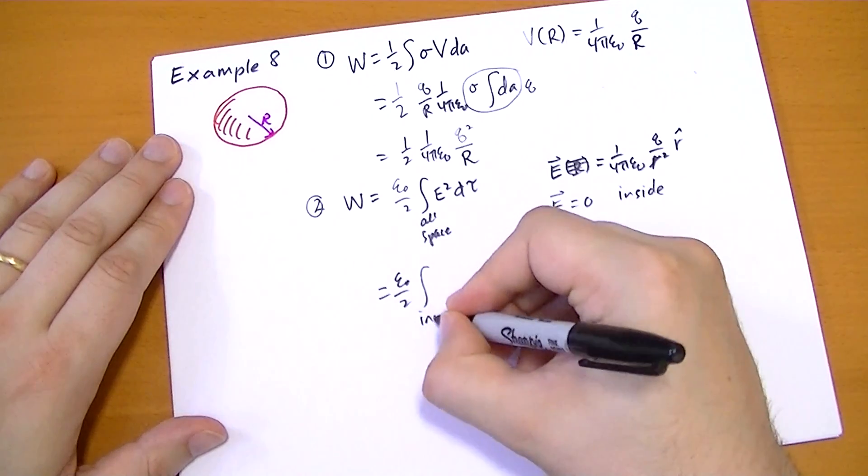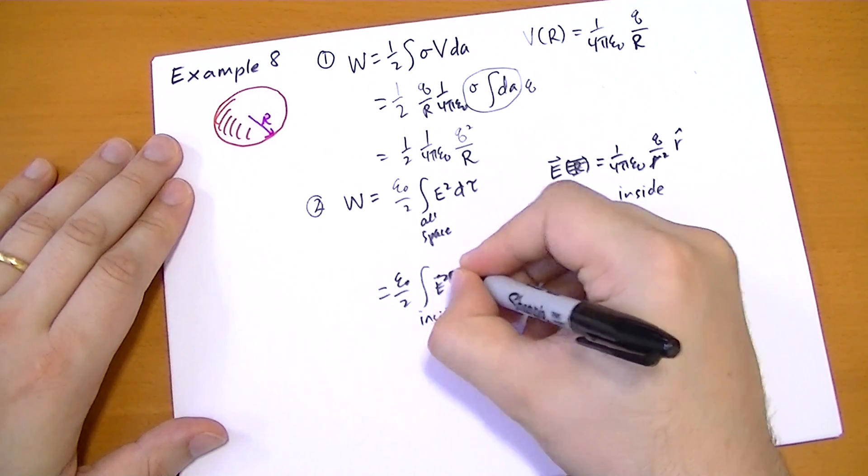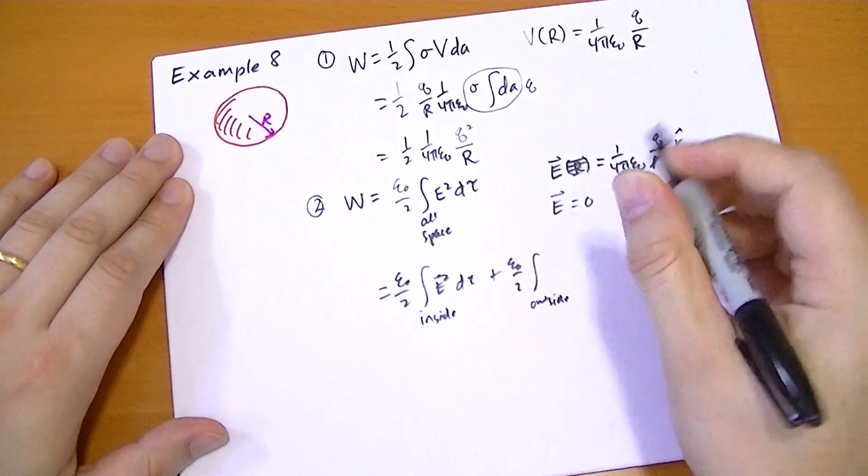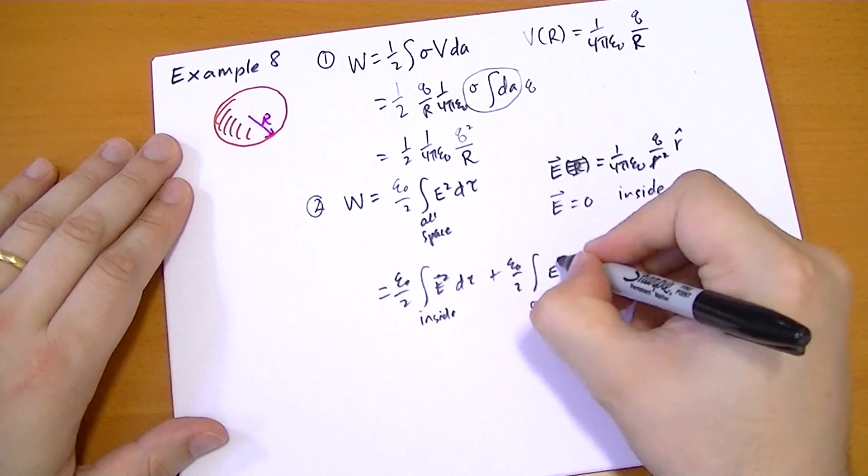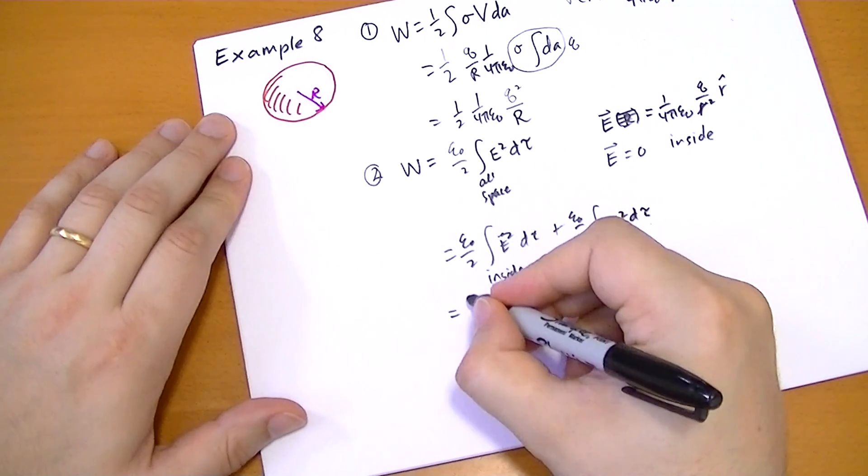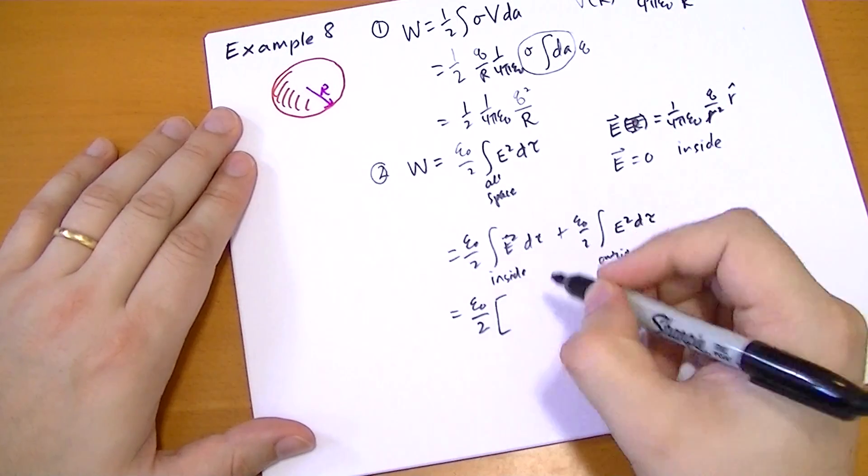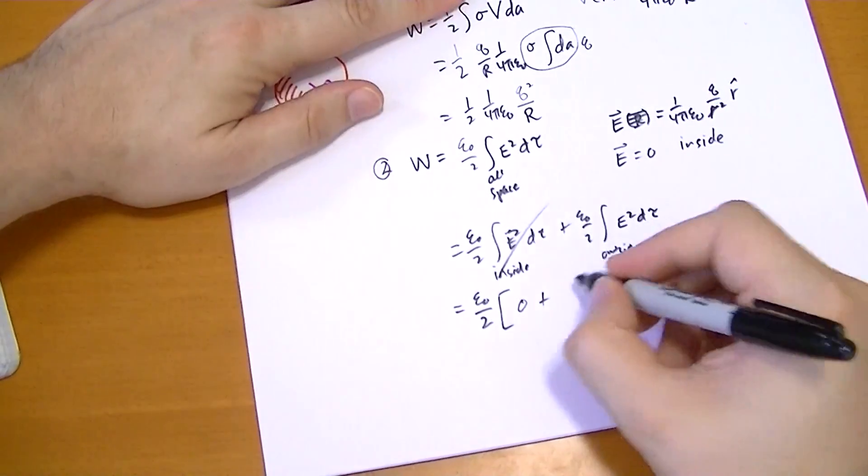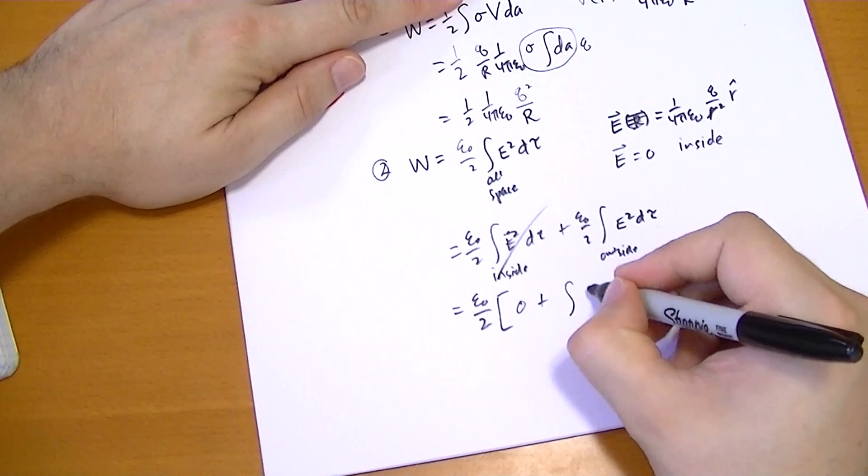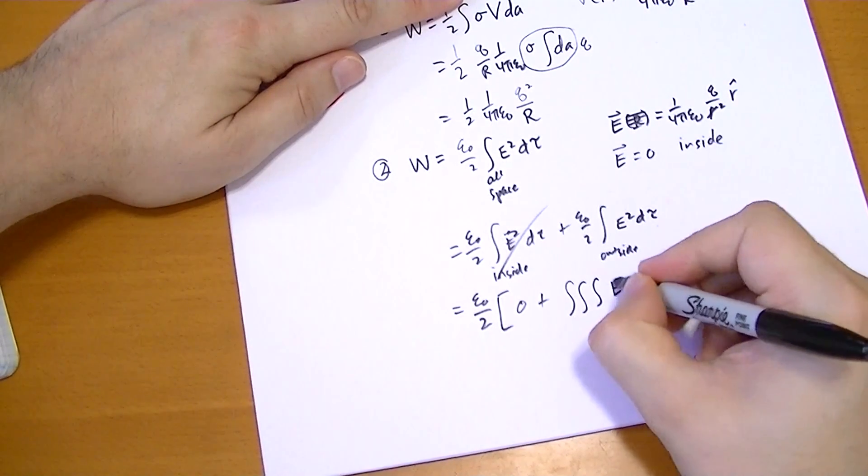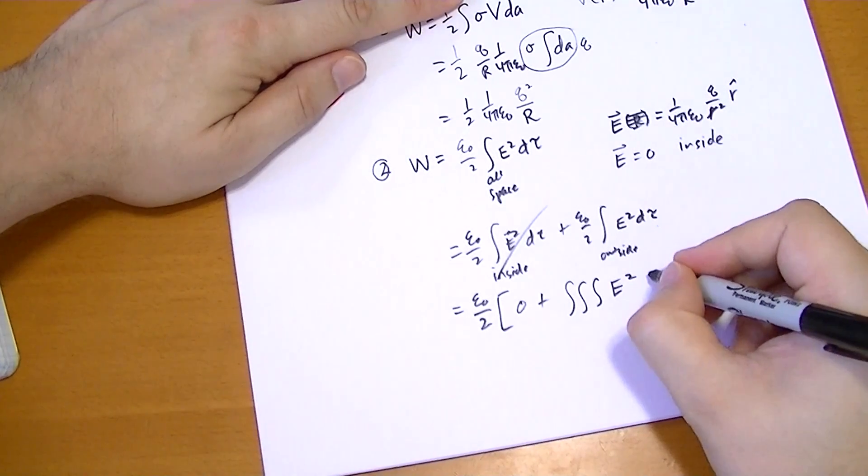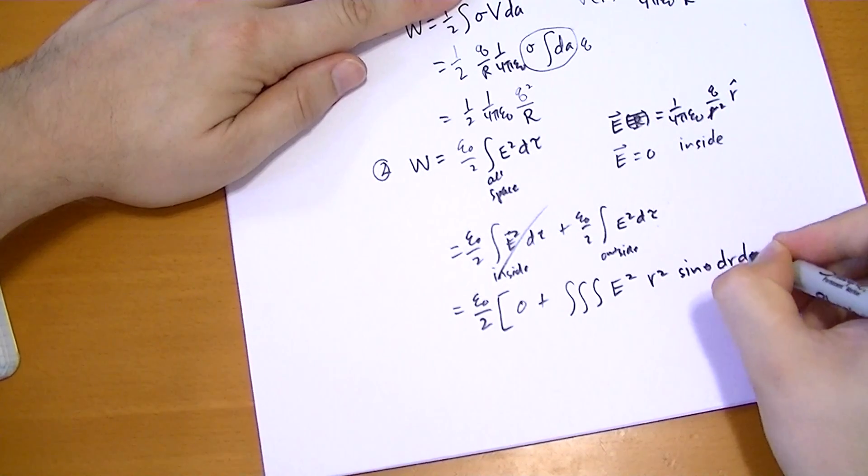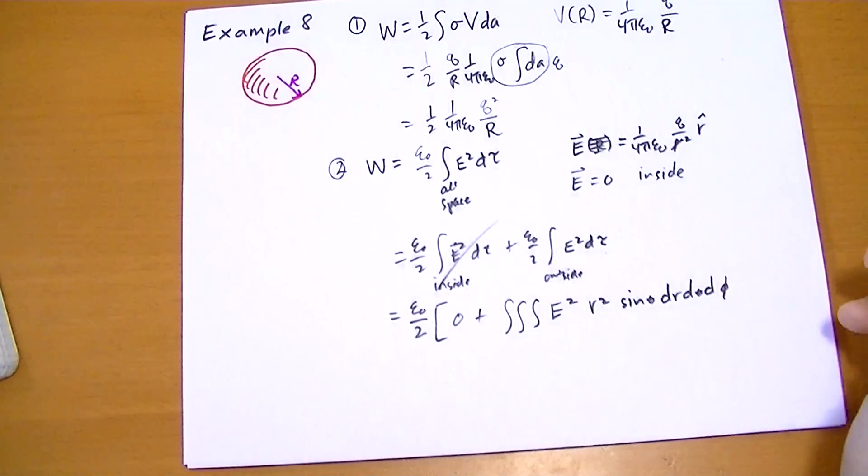So break this down into two integrals. We have the integral on the inside of E vector squared d tau plus the integral on the outside. Electric field inside is 0, so this becomes 0. So this is going to be the triple integral of E squared, d tau is R squared sine theta dr d theta d phi.